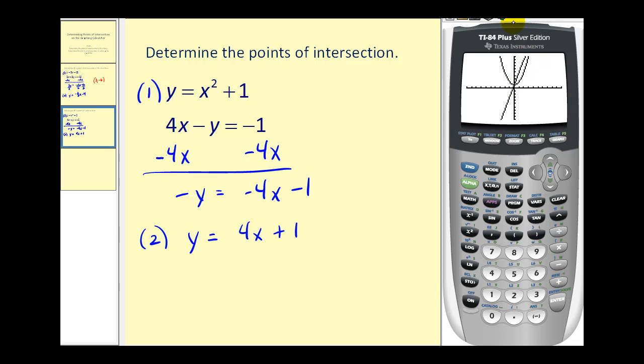Since we want to see higher on this graph, we're going to increase the y maximum. Let's press window. Let's change the y maximum to 20 and see if that's high enough. Press graph. There's our parabola, there's our line. We have a point of intersection here, and now we see the second point of intersection on the right.